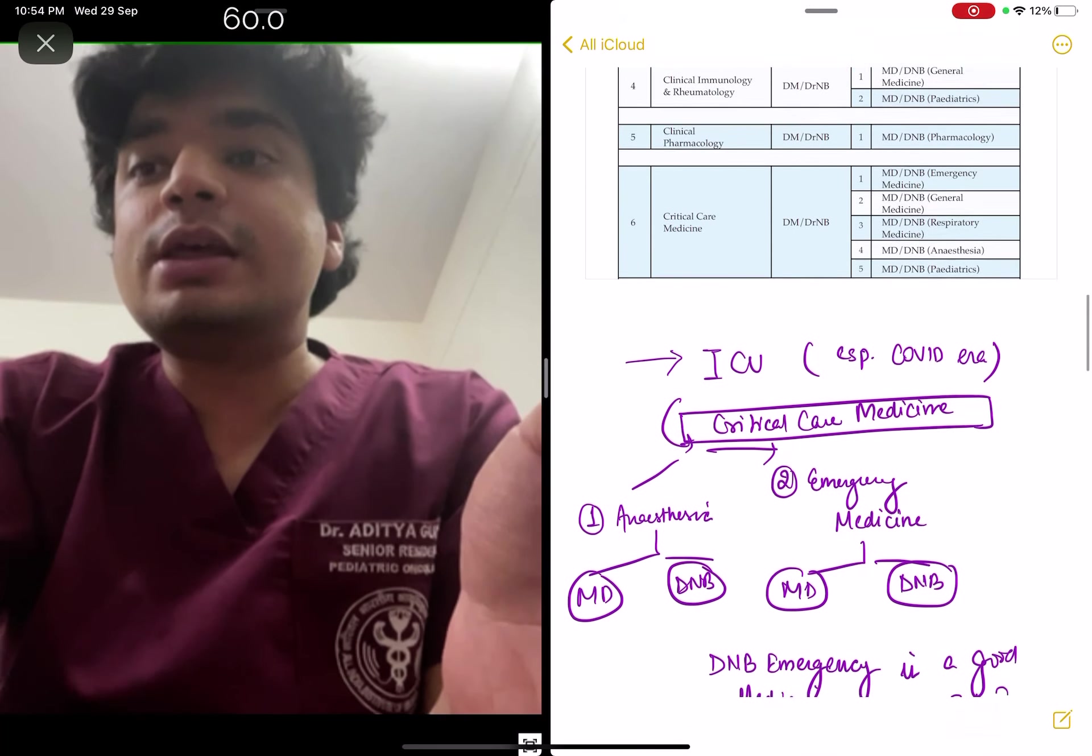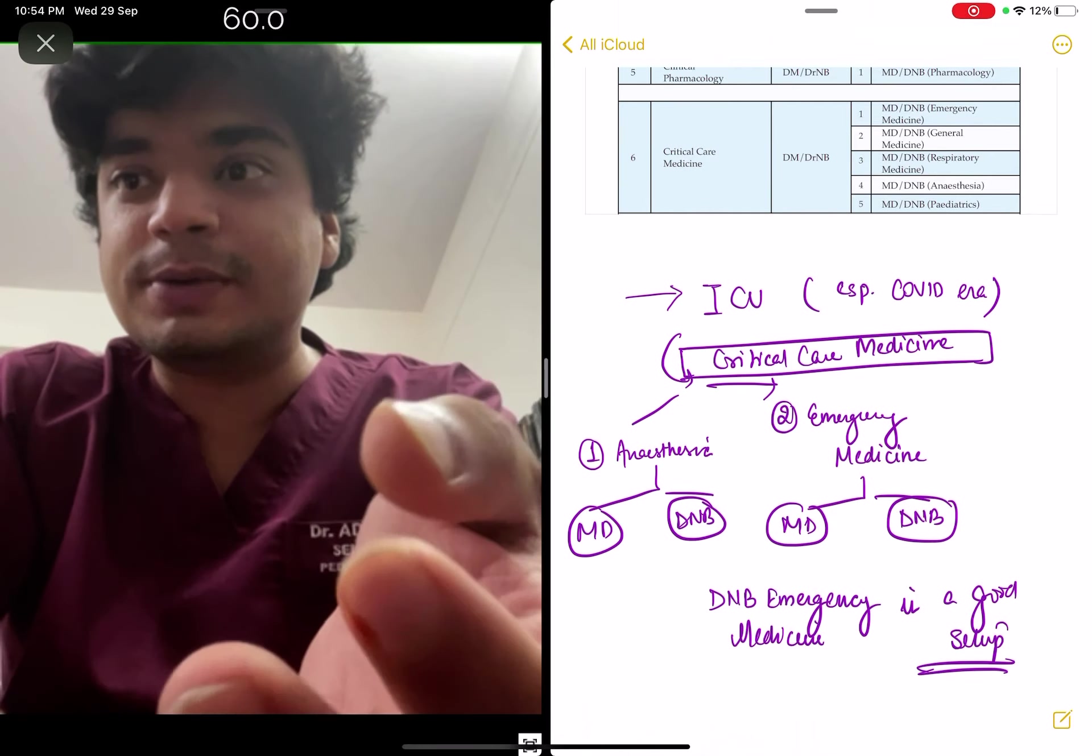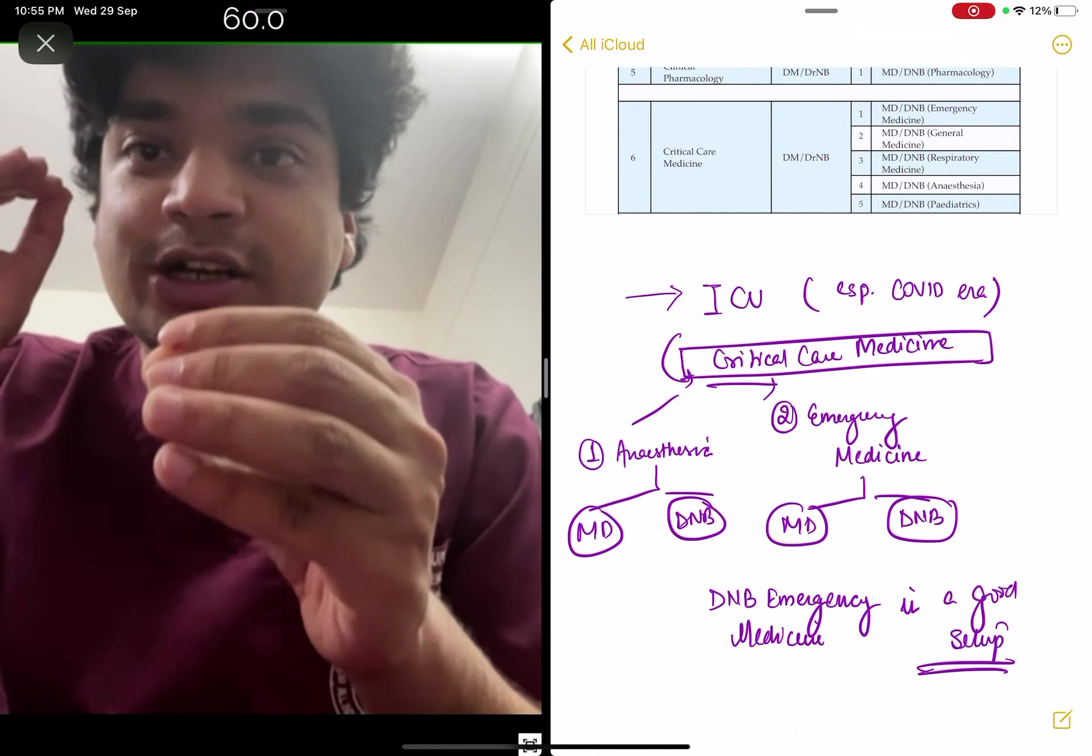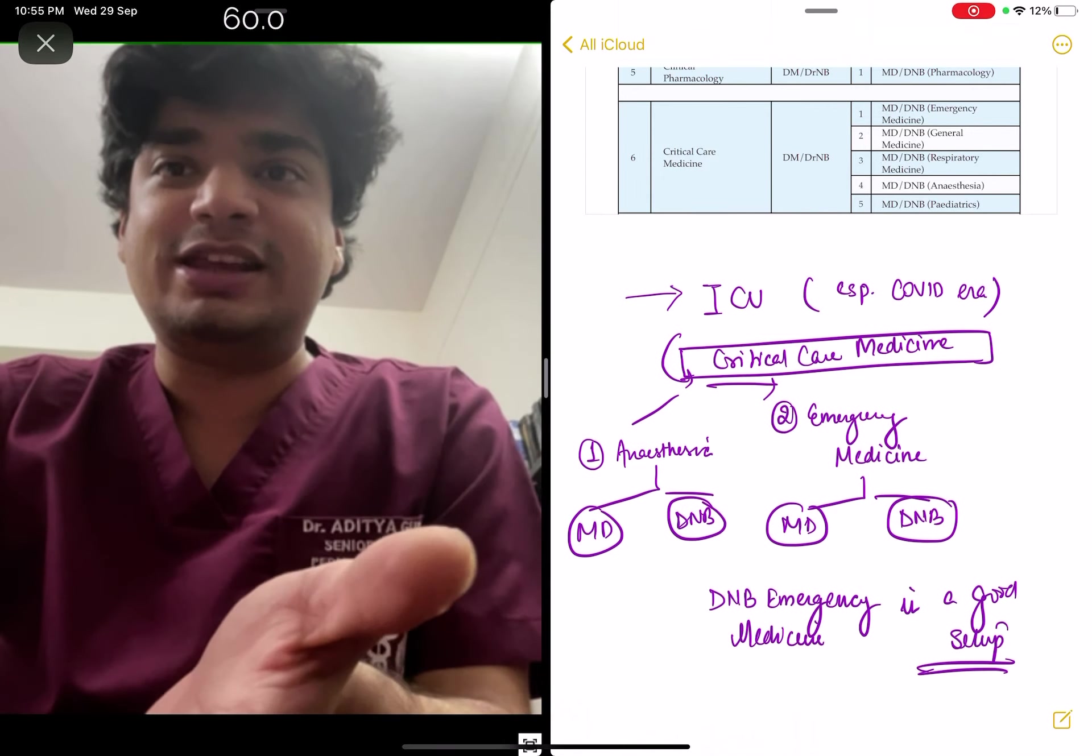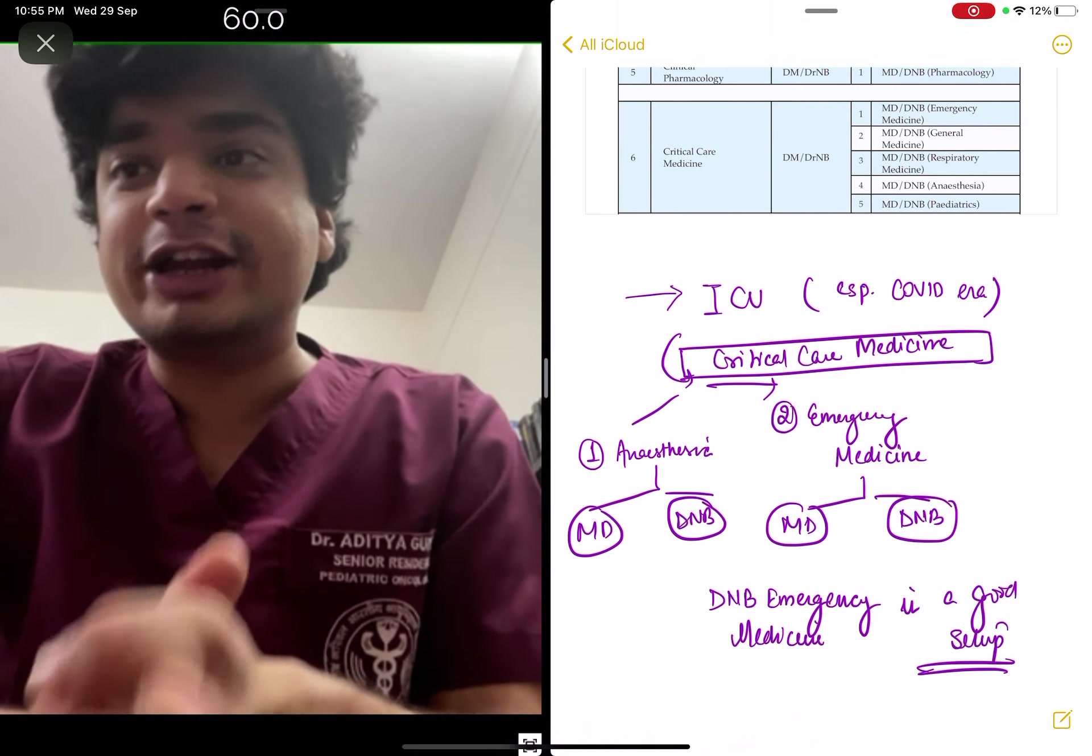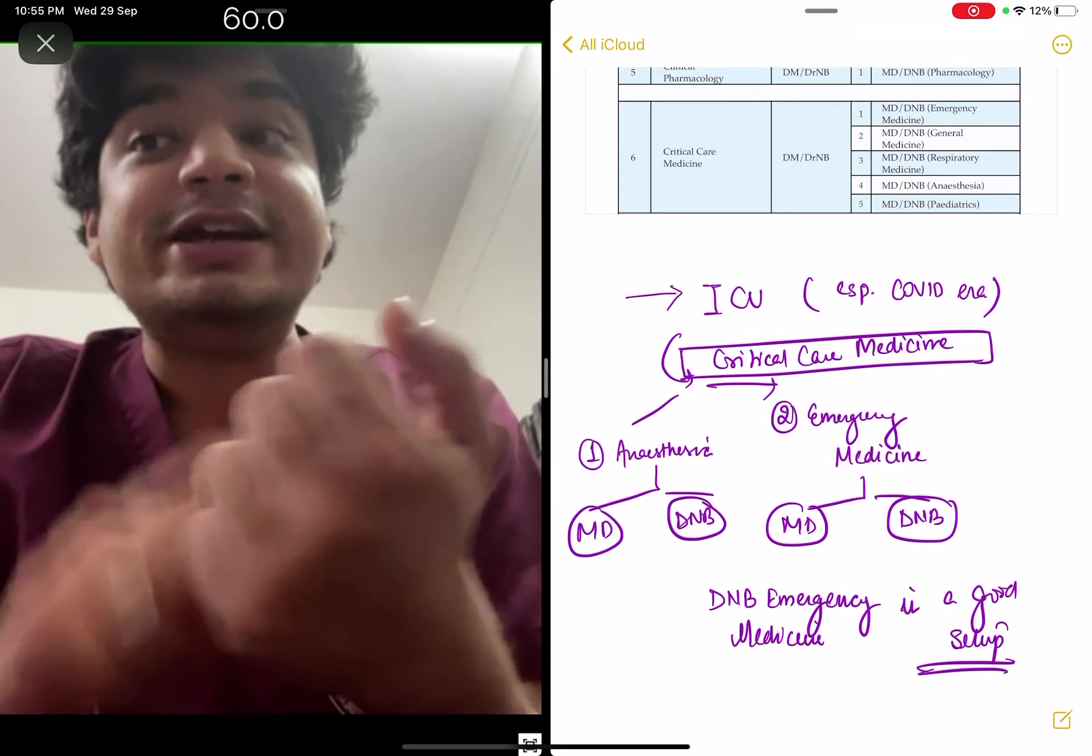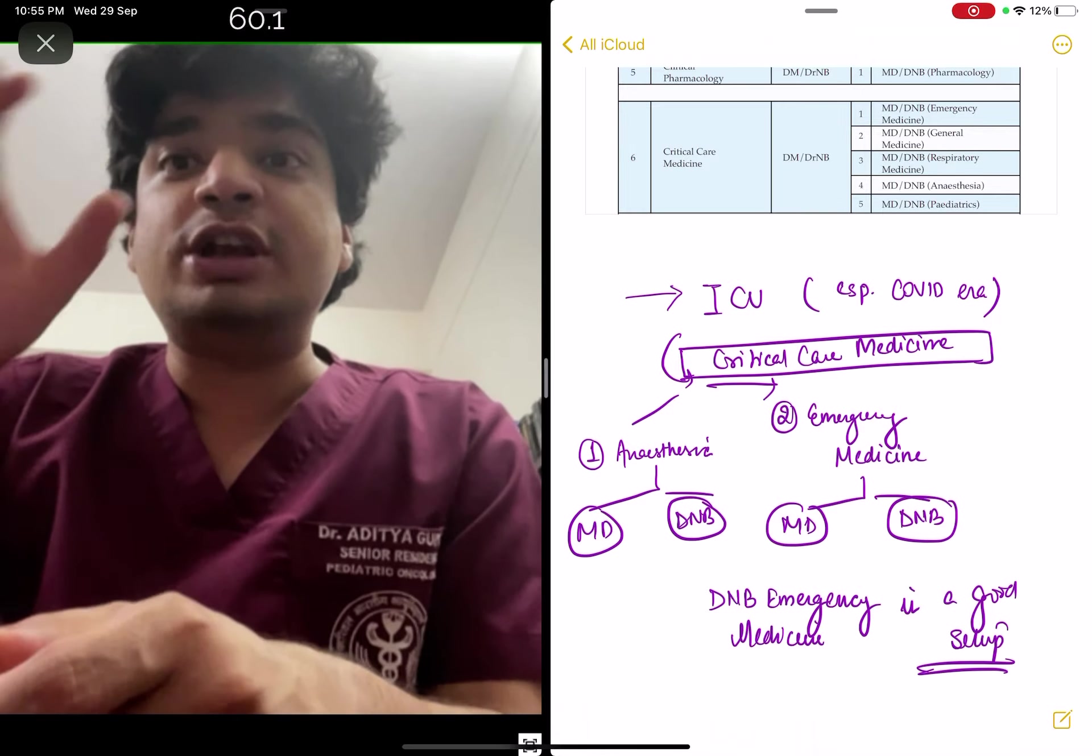In pediatrics, other than gastroenterology, hematology, rheumatology, critical care medicine, everything is eligible. Now this brings me to critical care medicine. As you can see, emergency medicine and general medicine are eligible. Critical care medicine is the field of the future and it has been shown in the COVID era that ICU management is the one thing a doctor should know.